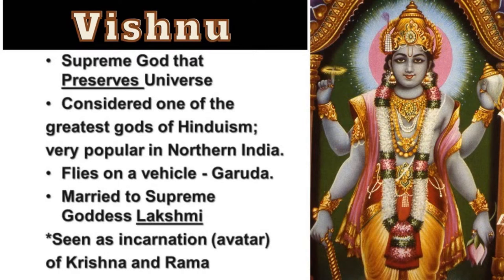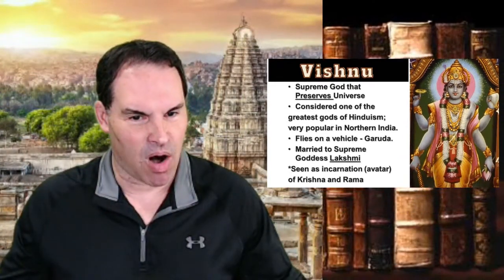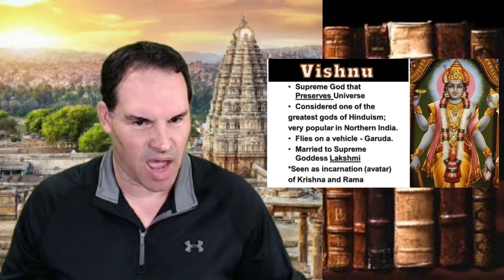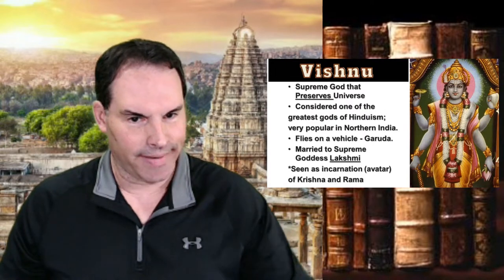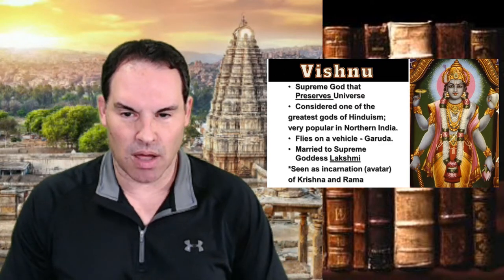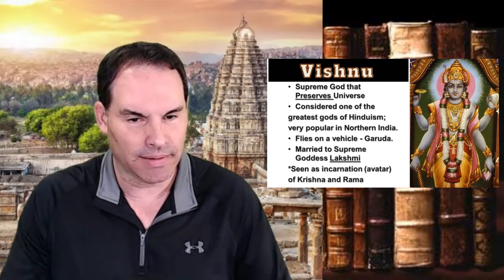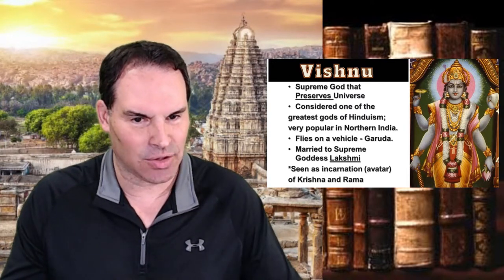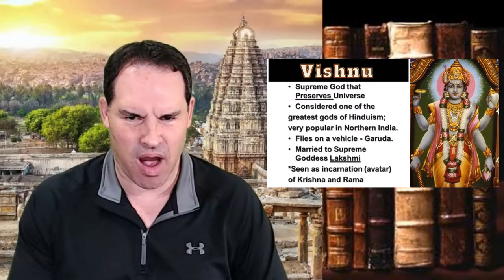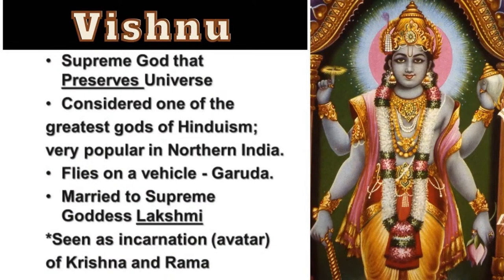Part of why Vishnu is popular is because of his different incarnations — supposedly there are 24 of them, where Vishnu came down to earth in human form. They call these avatars, or incarnations. Krishna is one popular incarnation, but the most famous is Rama — thought to be the seventh incarnation of Vishnu. That's part of why Vishnu is so popular, because of the different well-known variations of him.